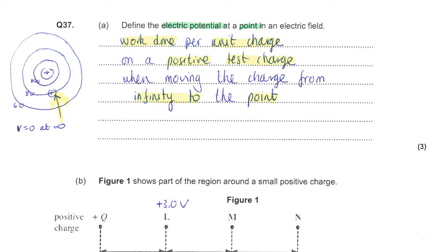Now, consider a positive test charge. If you were moving towards a central positive charge, it would be being repelled and you would have to do work against that force of repulsion. So as you do work, you would expect the potential to increase.